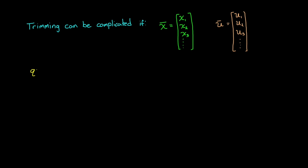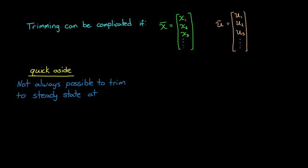For now, though, it's enough to understand the concept of trimming and how it relates to producing a steady state operating point. At this point, let me go off on a real quick aside. It's not always possible to trim to steady state at any arbitrary point in the state space. For example, there is no combination of inputs that will cause an aircraft to fly backward steady state even though the state space allows for that motion. So you have to understand your system well enough that you don't pick a combination of states that you can't find an equilibrium for.